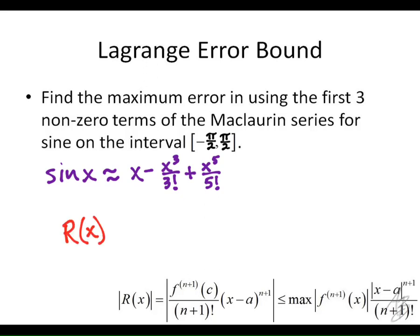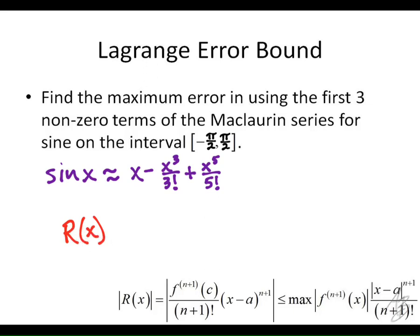We want to approximate the remainder term — or at least know its maximum value. If I want to make the approximation exactly equal to sine, I can add the remainder term, and that remainder accounts for the difference between the two functions. So if I know the maximum value of the remainder term, this tells me the maximum value of my error. The formula says the remainder is less than or equal to the maximum of the sixth derivative of sine on this interval.